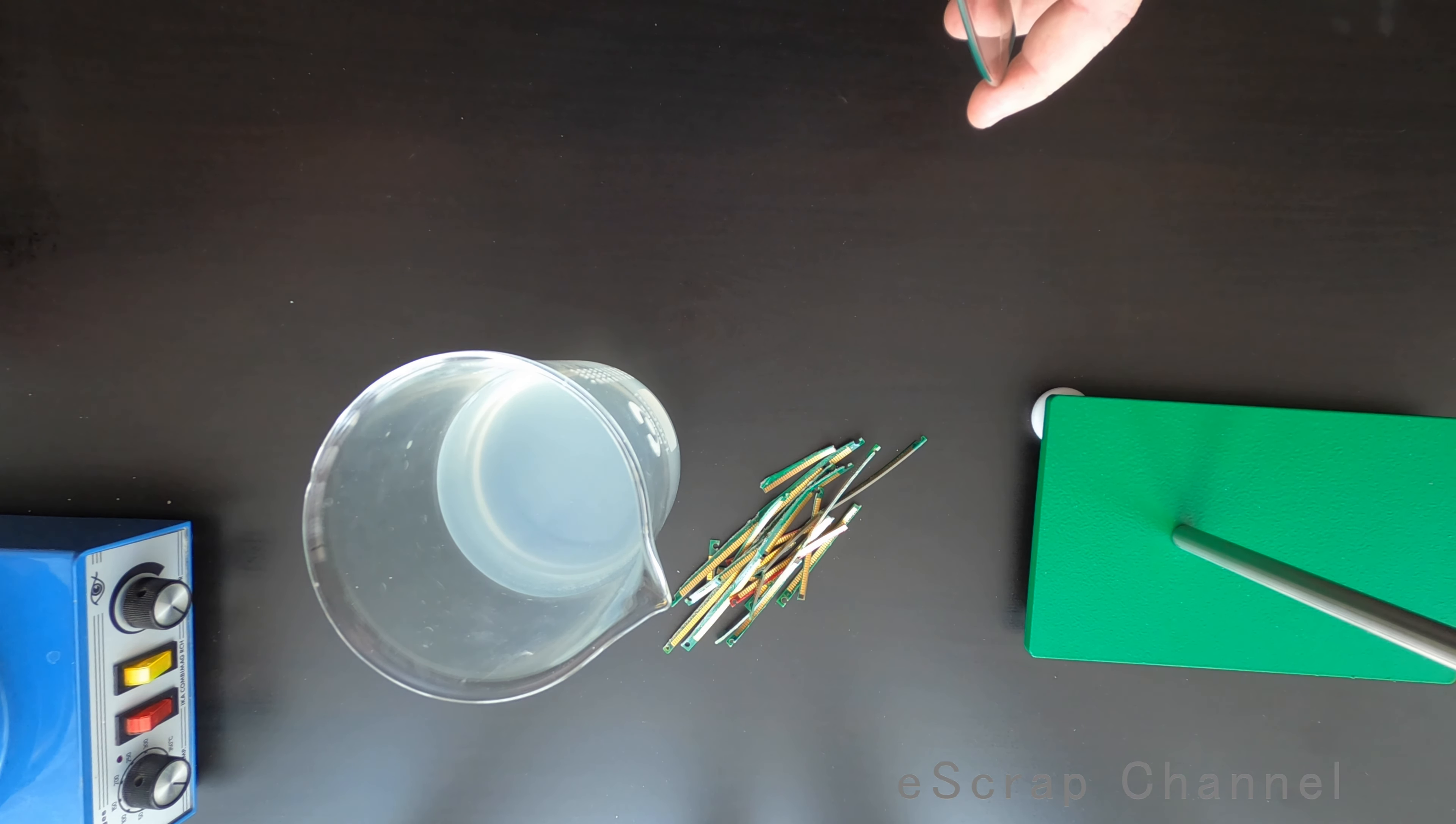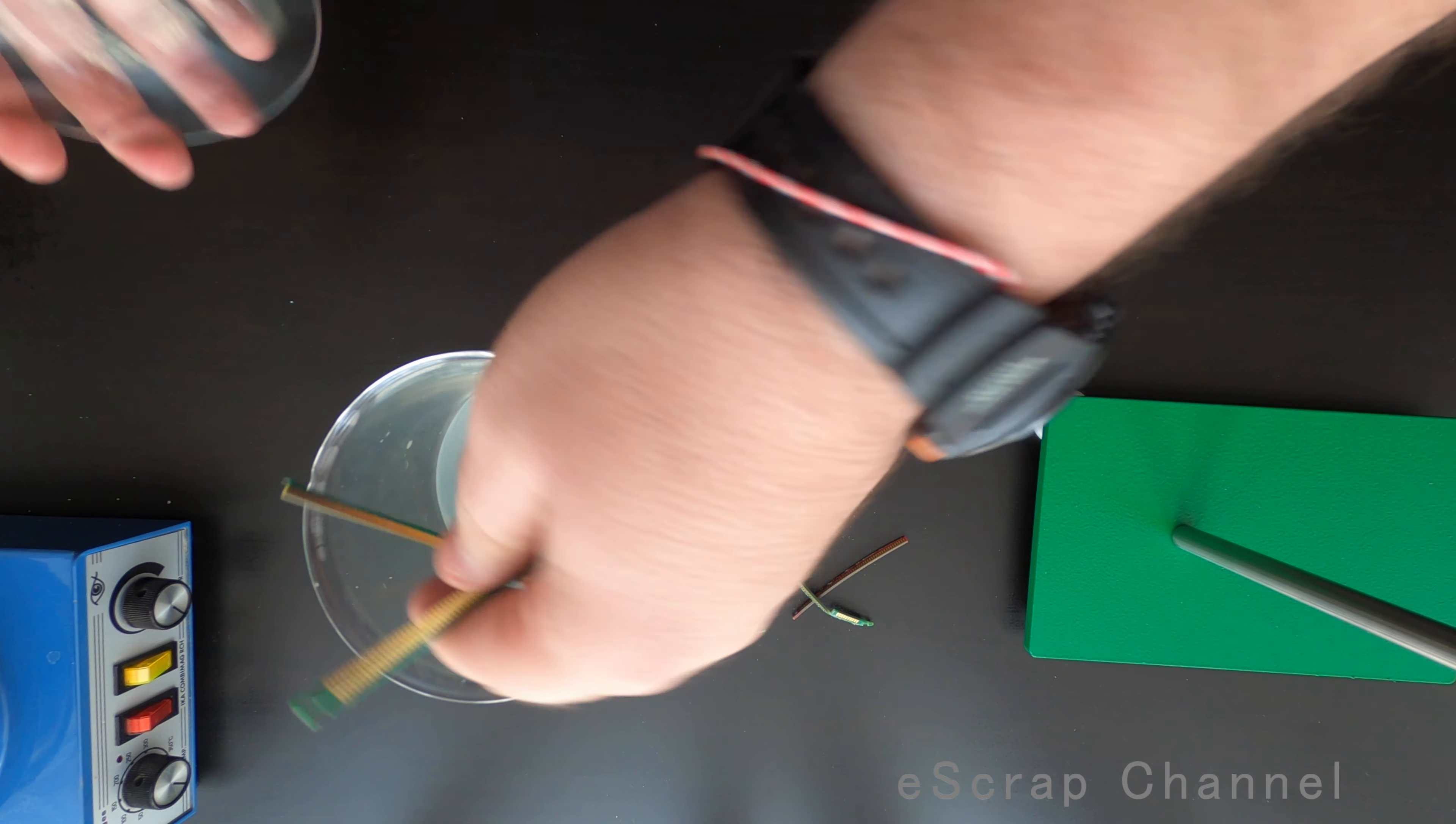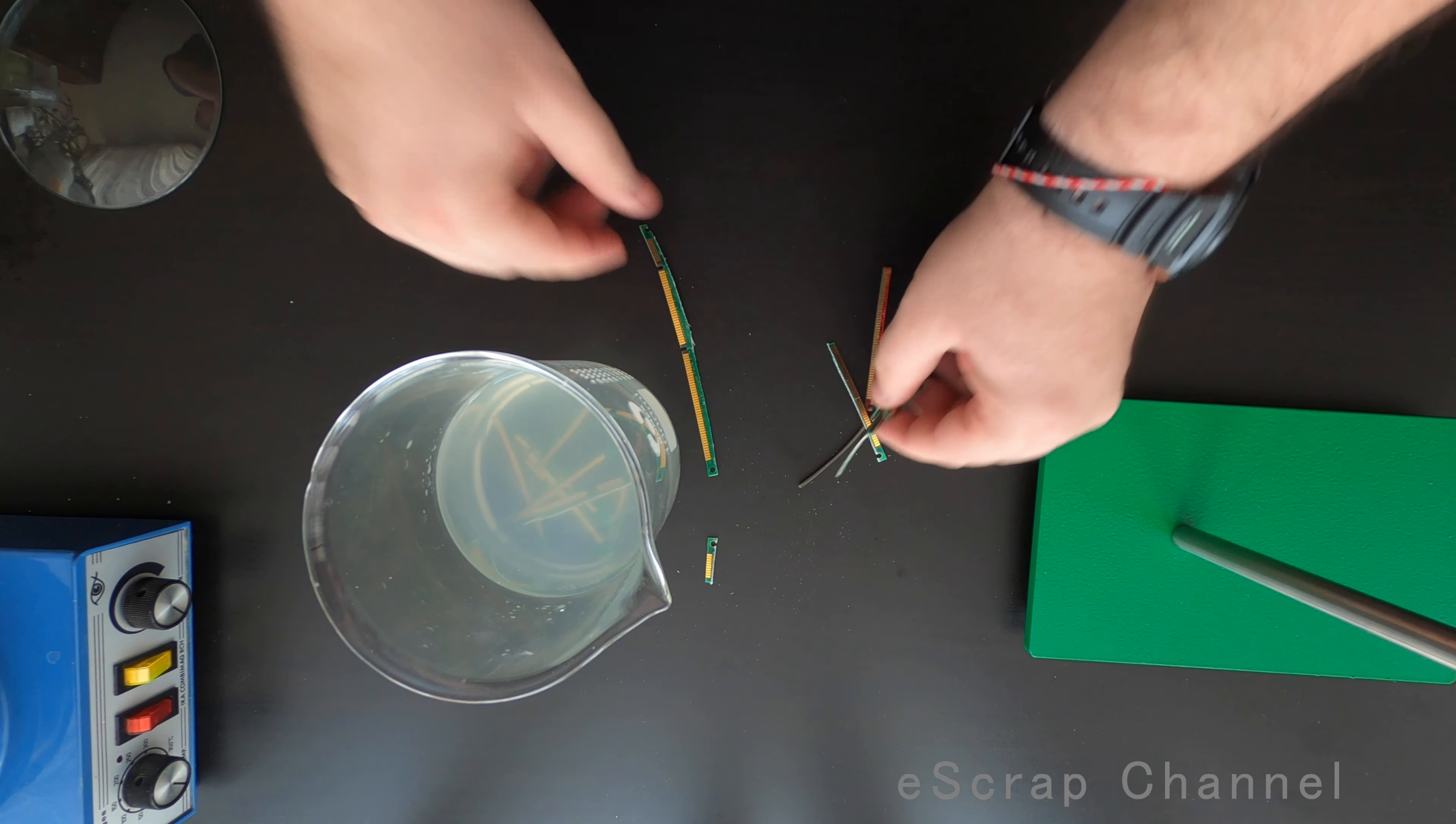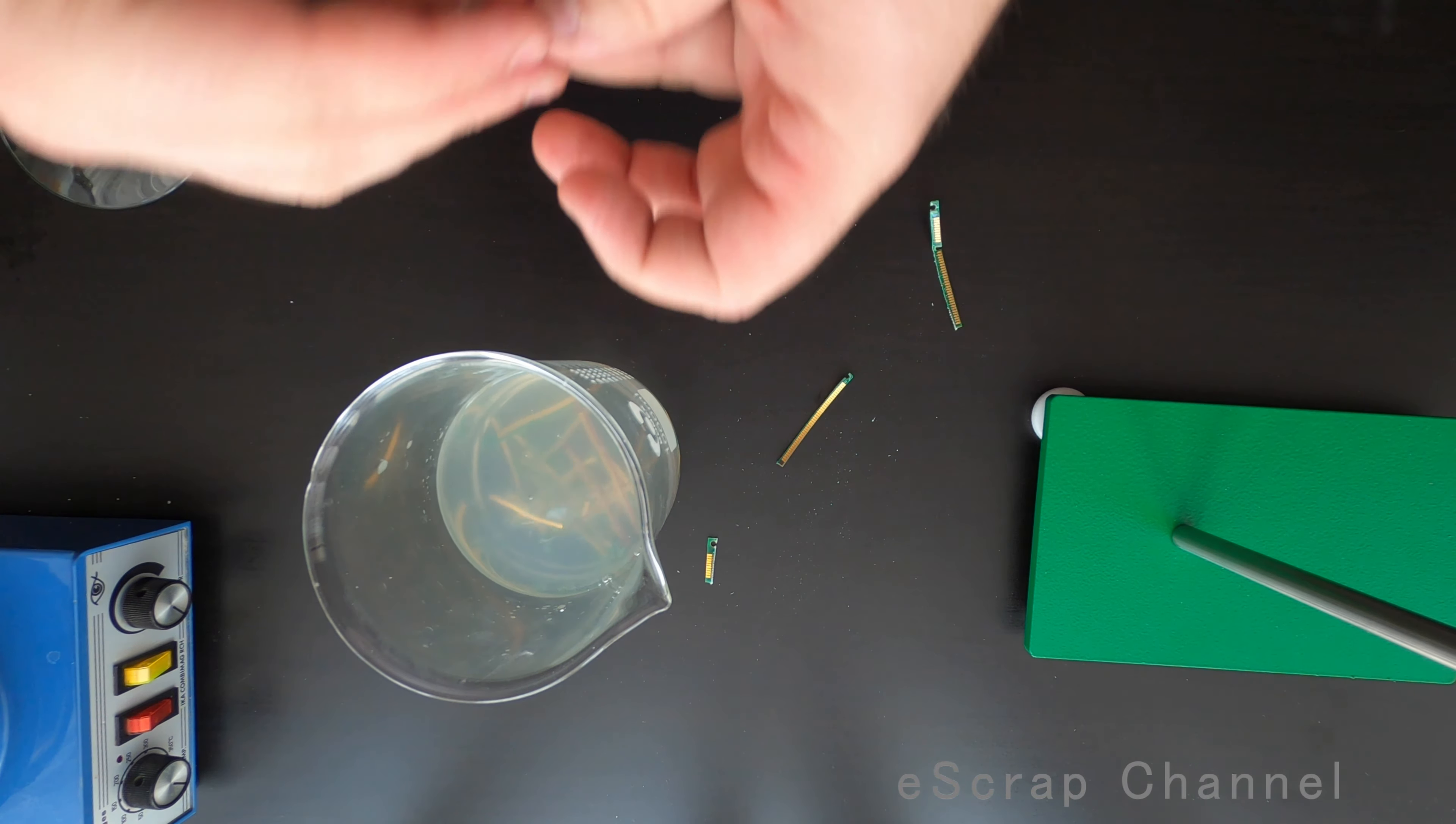I'll remove my magnetic stirrer and I will add my RAM fingers. I'll break them a little like this. As I'm putting them in, I'll tell you what I expect to happen.